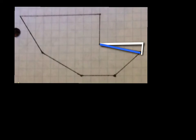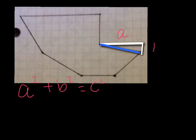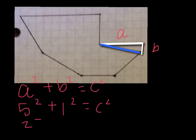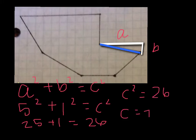Now we are going to find the length of the last side, which is the blue side. As usual, a squared plus b squared equals c squared. In this case, the long white side is a, and the shorter one is b. A is 5 squared, plus b, which is 1 squared, equals c squared. So 25, which is 5 squared, plus 1, which is 1 squared, equals 26. So c squared equals 26, and c equals the square root of 26, which cannot be simplified.